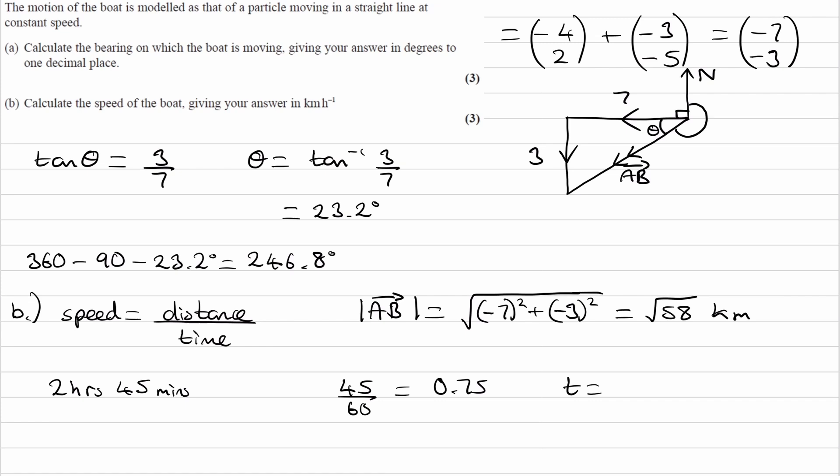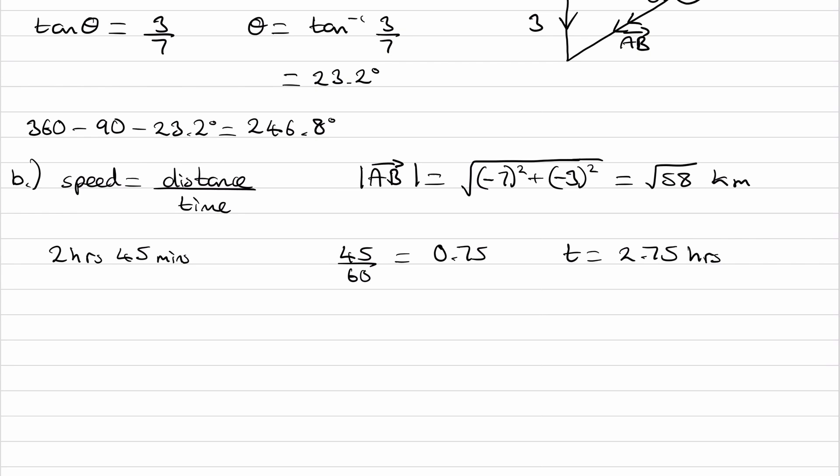Our time will then be 2.75 hours. So our speed will be √58, the distance in kilometers, divided by the time in hours, and this gives us 2.77 kilometers per hour.